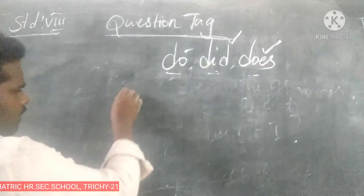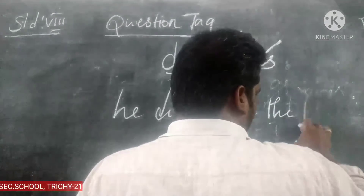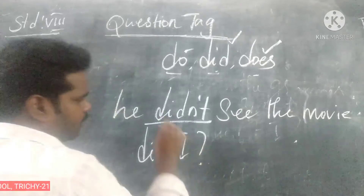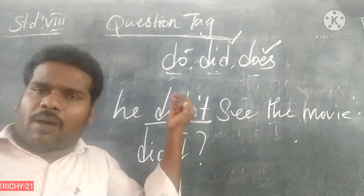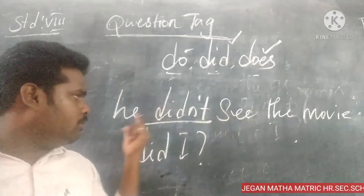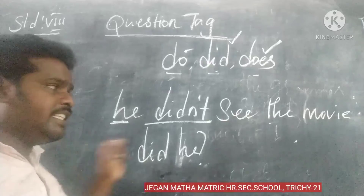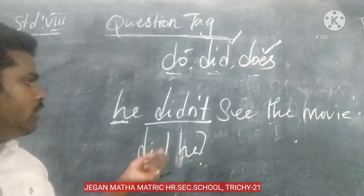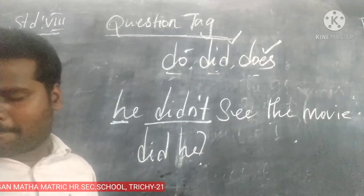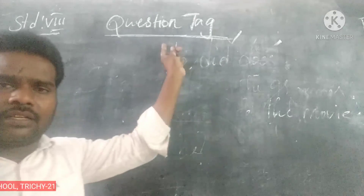For a negative statement: 'He didn't see the movie' — it is negative, so the tag changes to positive: 'did he?' Remember the subject must match — 'he didn't see the movie, did he?' Also: 'He doesn't see the movie' — present level, tag is 'does he?' So whatever it is — positive changes to negative, negative changes to positive. Hope you all understood the question tag. Thank you, students.